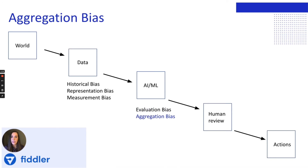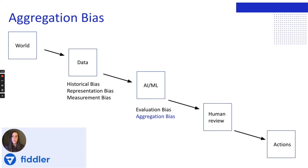Aggregation bias arises during model construction when distinct populations are inappropriately combined. There are many applications where the population of interest is heterogeneous and a single model is unlikely to suit all groups. An example of this is with diabetes patients, where HbA1c levels — used to measure blood glucose and widely used in diagnosis and monitoring — differ in complicated ways across gender and ethnicities. Here, a single model would not be the best choice.